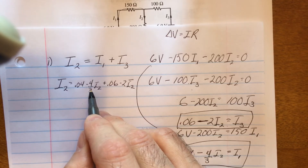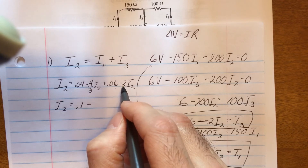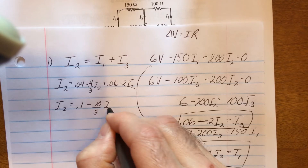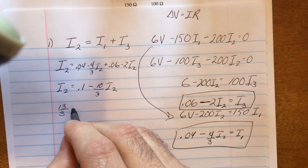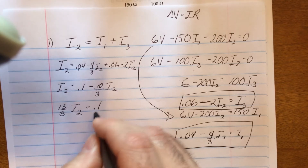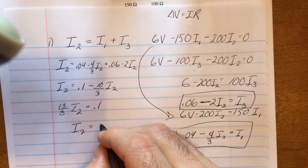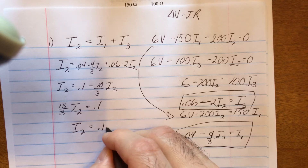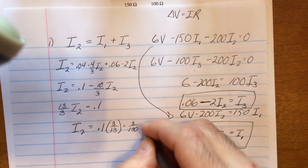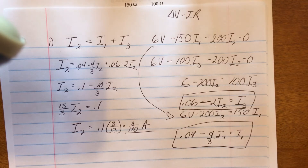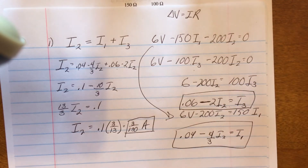Now I'll combine like terms. I'll have 0.1 minus ten-thirds·I2. Adding ten-thirds to both sides, I'll have thirteen-thirds times I2 equal to 0.1. Rearranging, I2 equals 0.1 times 3/13, which equals 3/130 amps. Normally I would have brought a calculator and converted that to a decimal.